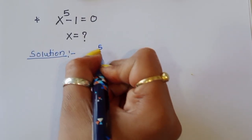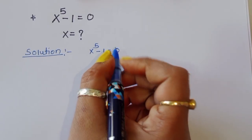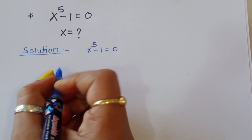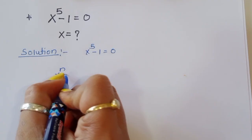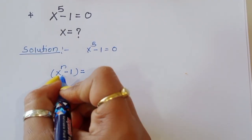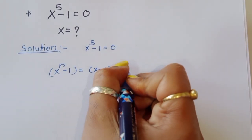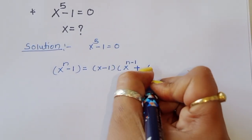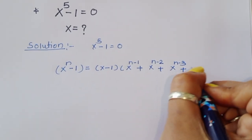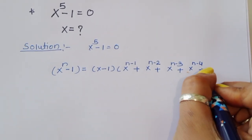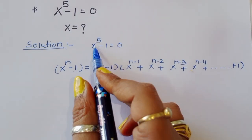x^5 minus 1 is equal to 0. We know the formula: x^n minus 1 is equal to (x minus 1) times (x^(n-1) plus x^(n-2) plus x^(n-3) plus x^(n-4) and so on, plus 1). This is the formula we will use here.